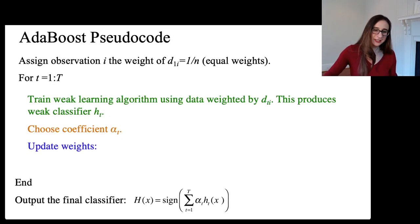So let's go through more of the technical details of AdaBoost. So again, we start with equal weights on all the data points and then at each iteration we train the weak learning algorithm using that weighted data. And this produces a weak classifier. We choose our coefficients for the weak classifier, which tells you how important that thing is in the final combination and then update the weights.